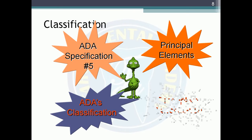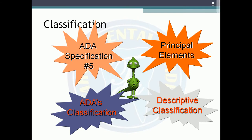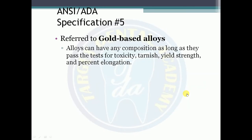The classification of dental casting alloys is according to: ADA specification number 5, principal elements, and descriptive classifications. Under ADA specification number 5, these are referred to as gold-based alloys. Alloys can have any composition as long as they pass tests for toxicity, tarnish, yield strength, and percent elongation.